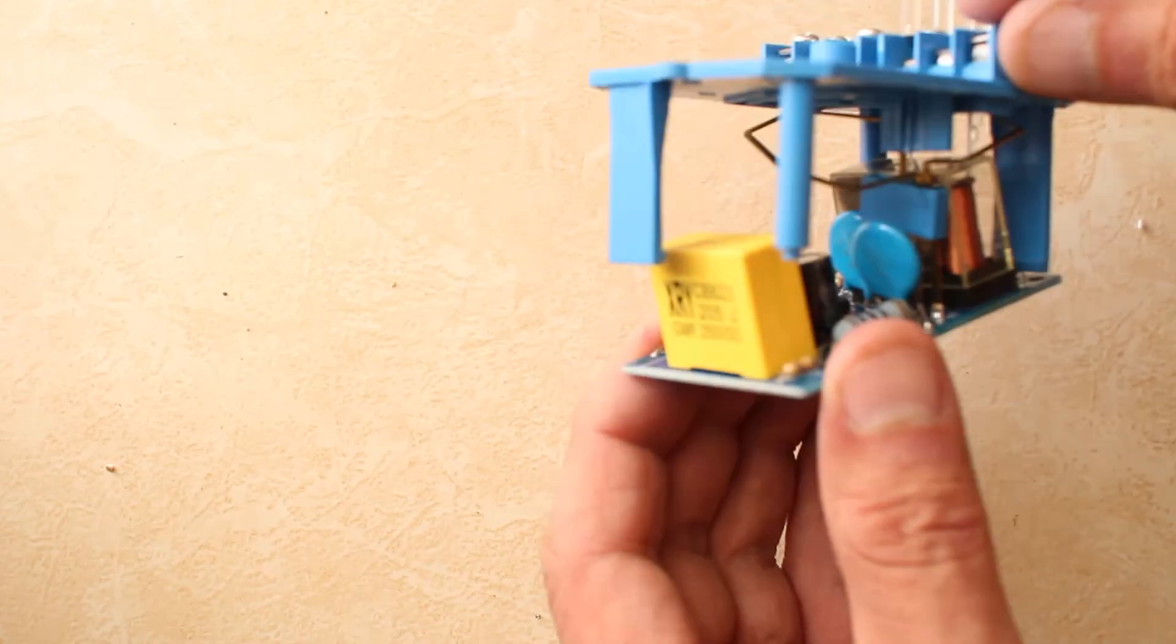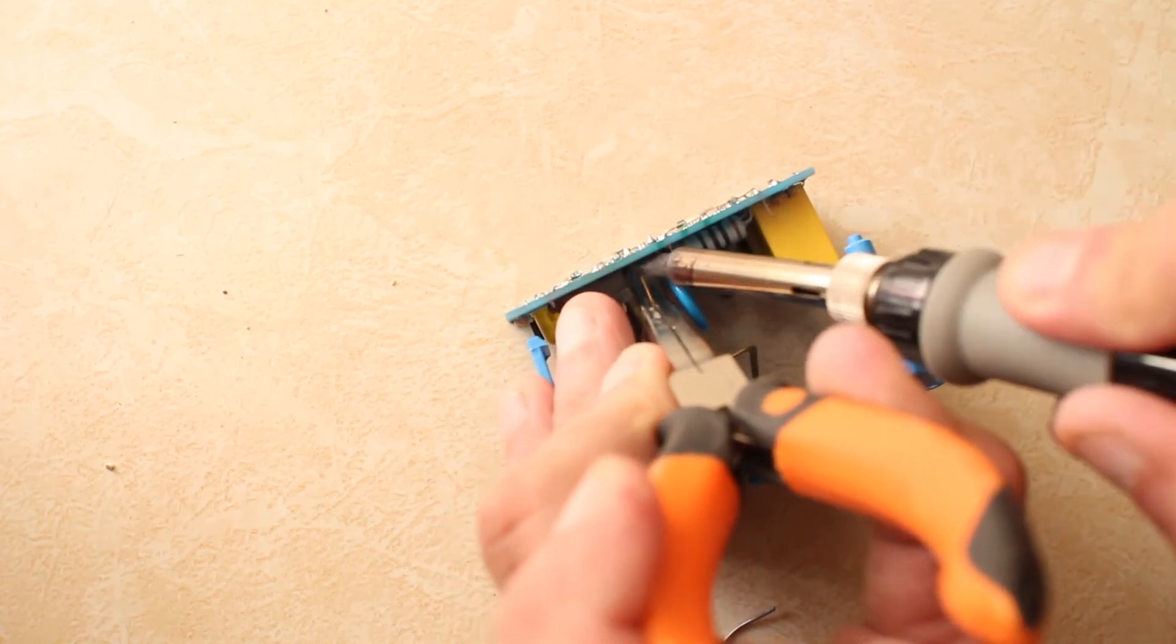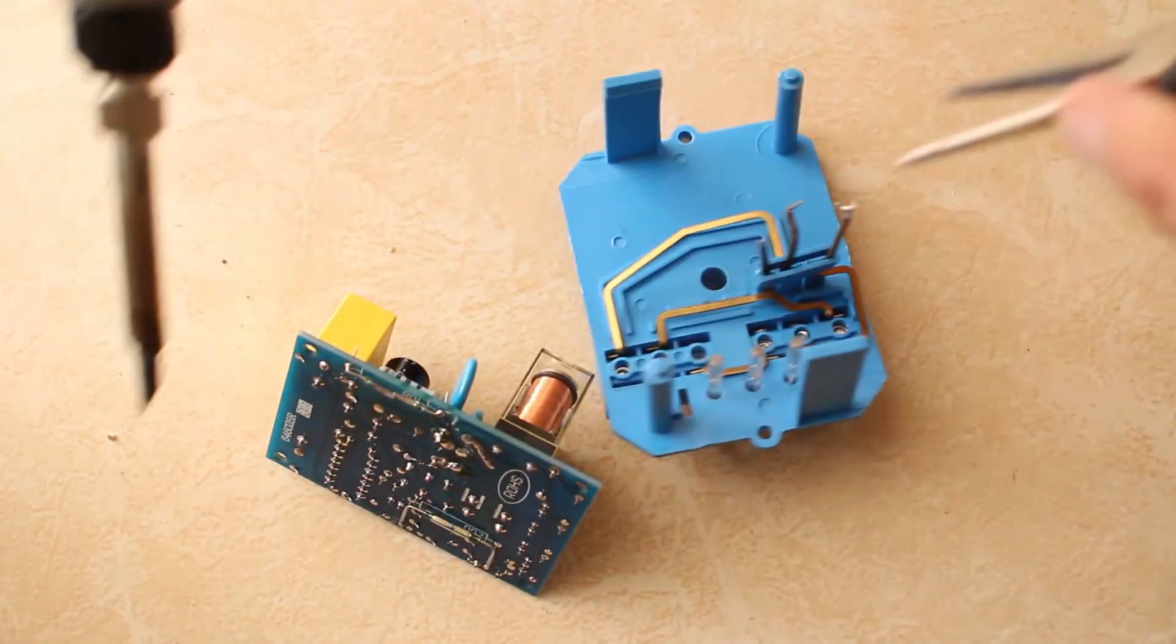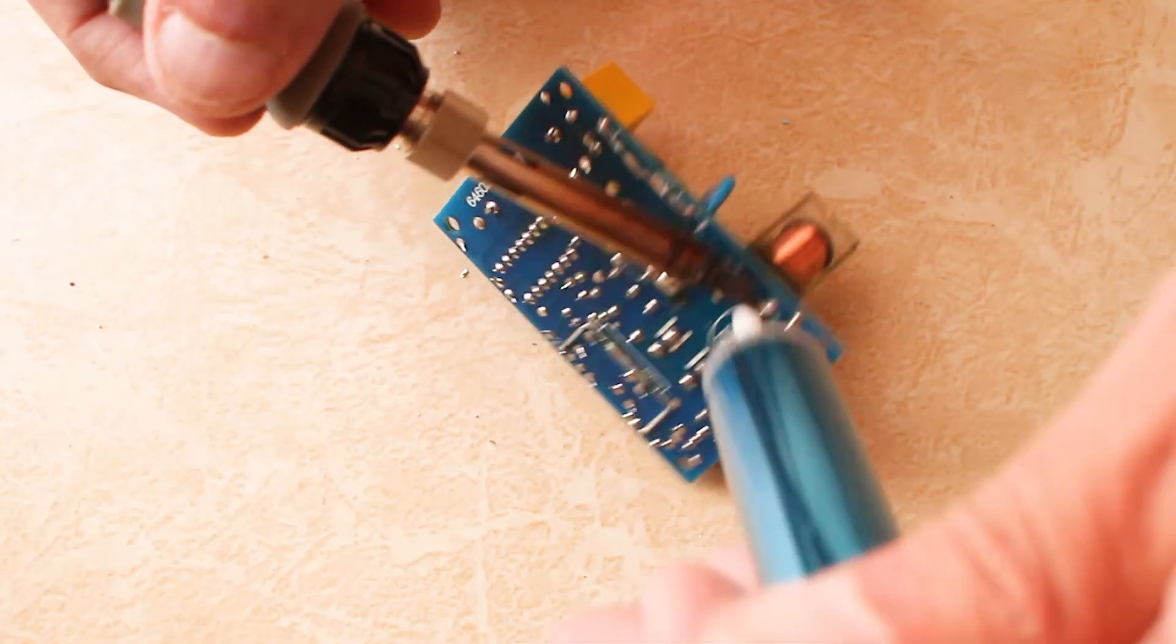I desoldered the front blue plate which has three copper wire strips linking it to the circuit board. It was a bit of a struggle just using a soldering iron. Now on to desoldering the relay.